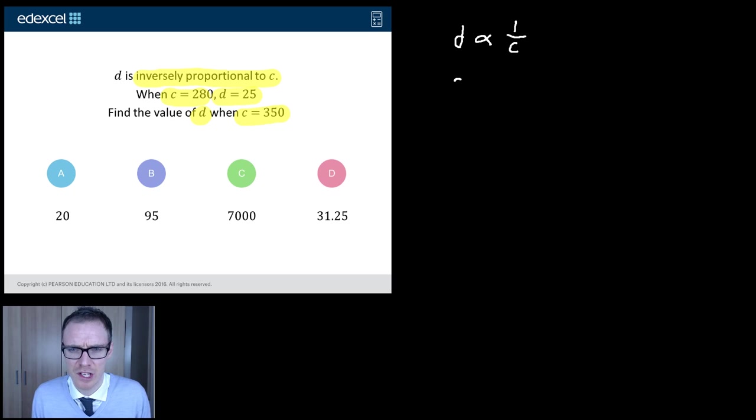Now my next step is to write that as an equation. So D equals my constant times by 1 over C. That's the same as doing a constant K times by 1 over C.